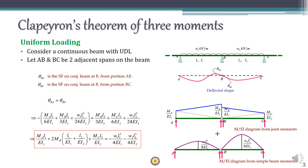Now let's see how the Clapeyron's theorem of three moments equation looks. We take the uniform loading case initially. We consider two adjacent spans AB and BC, which can be part of a larger continuous beam. The first span AB is subjected to a UDL of w₁ over its entire length L₁ with moment of inertia I₁, and the second span BC is subjected to a UDL of w₂ over its span L₂ with moment of inertia I₂.